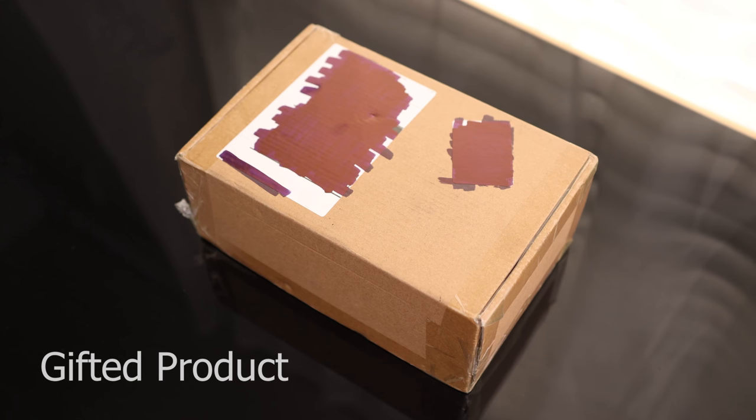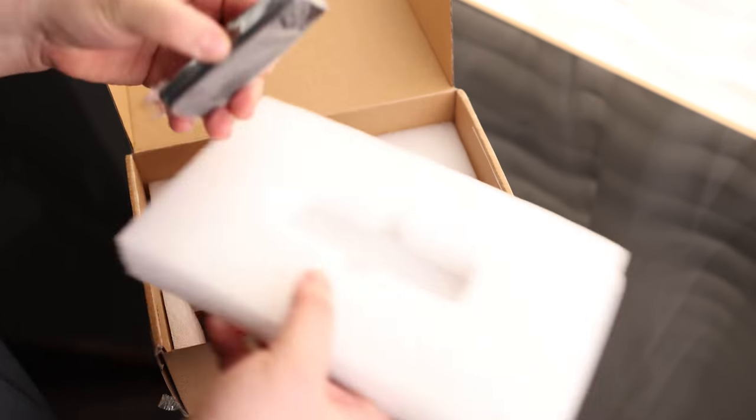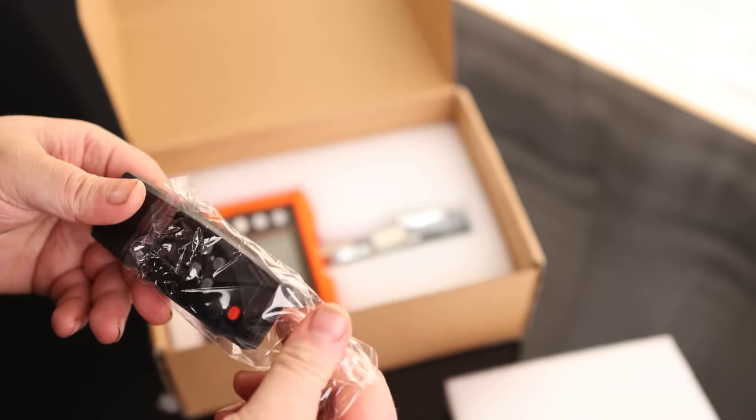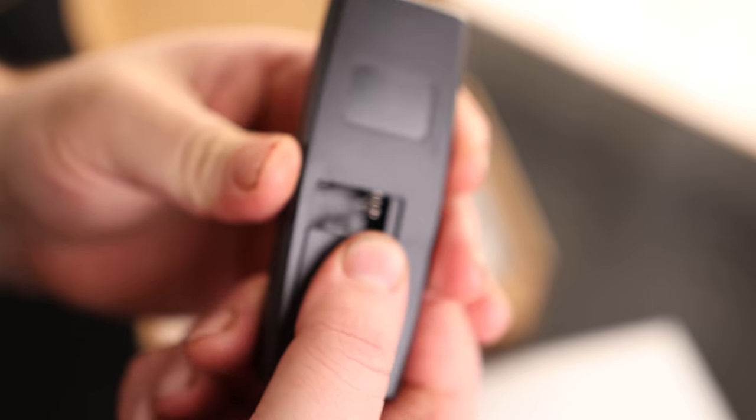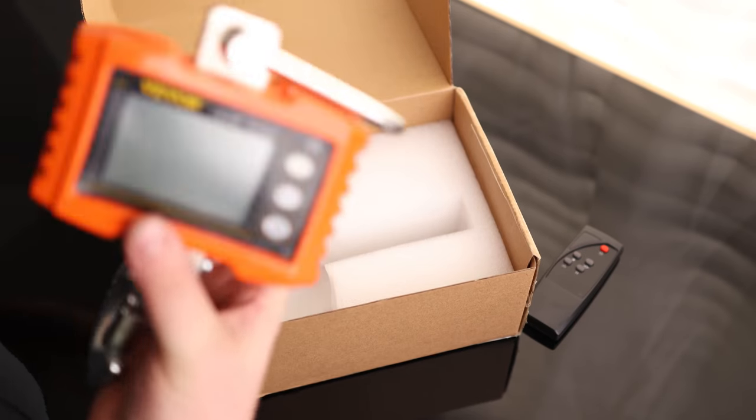All right, let's take a look at the heavy-duty crane scale. We do have a full-color instruction manual. This one actually has a remote that takes two AAAs. And this is the scale.